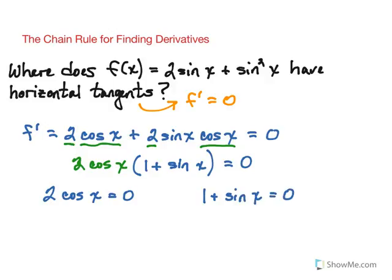So on the left, if we divide out the two, we're looking at cos(x) = 0. Think of your unit circle and where cosine equals zero. That's going to happen at the top of the circle at π/2, and at the bottom of the circle at 3π/2.